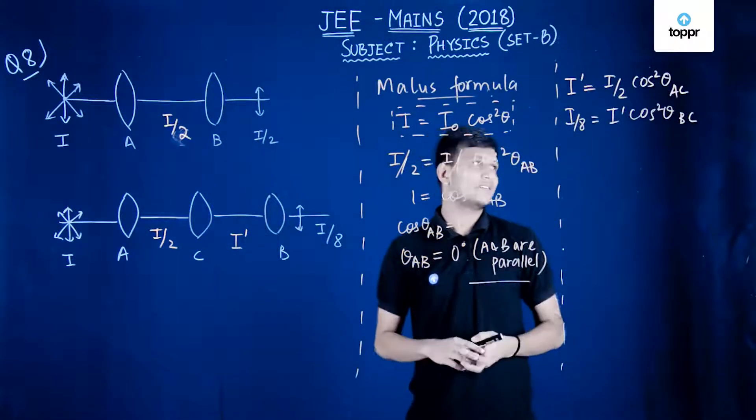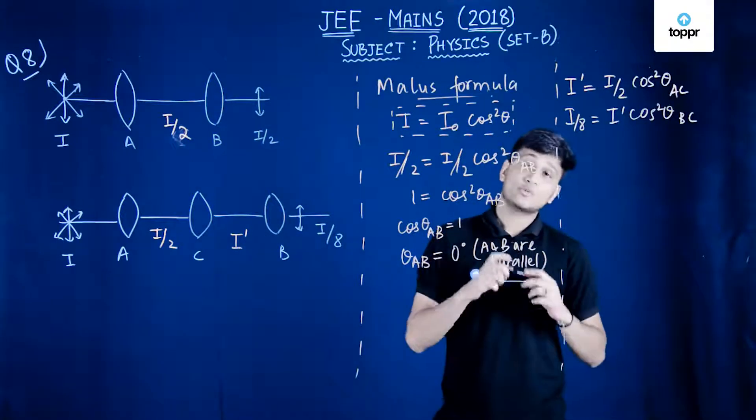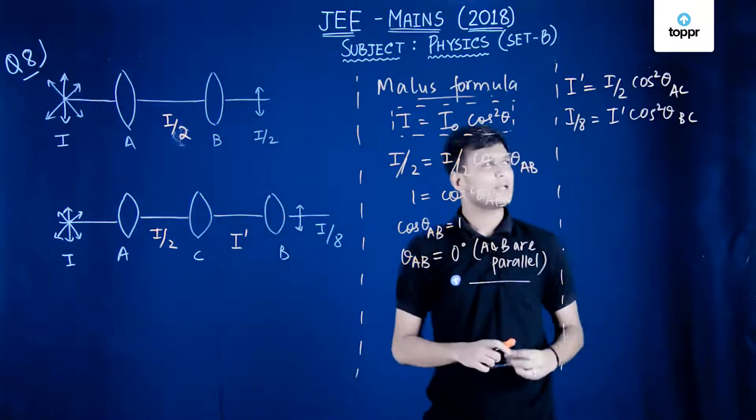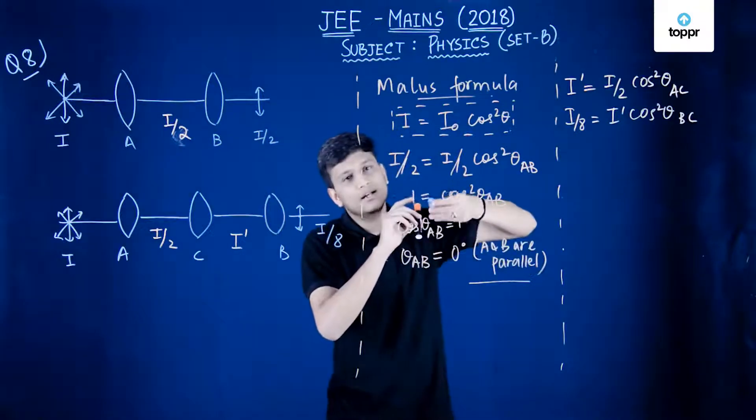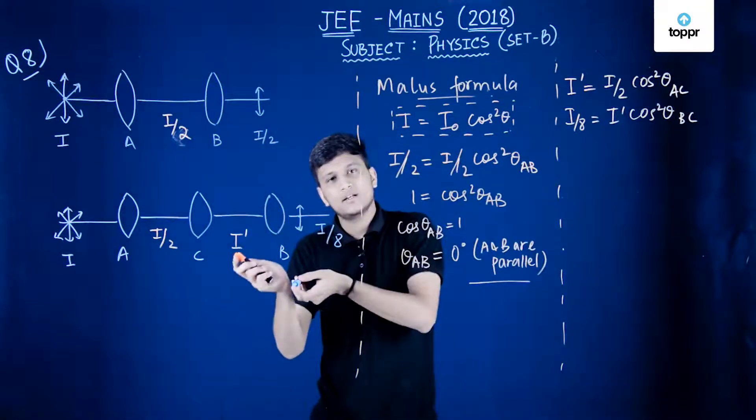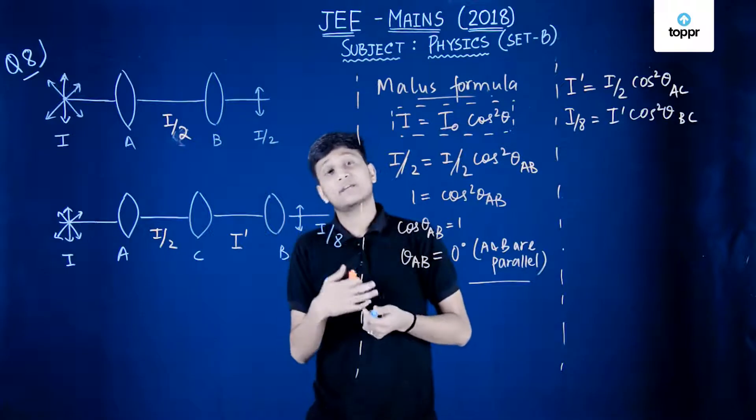Before solving them and applying some maths, one thing that is to be observed here is that because A and B are parallel, whatever angle C makes with A, that would be the same angle as C makes with B.